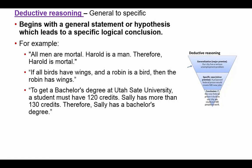Another example of deductive reasoning: to get a bachelor's degree from Utah State University, a student must have 120 credits. Sally specifically has more than 130 credits; therefore Sally has a bachelor's degree. The key with deductive reasoning is starting with a general statement that leads to a very specific conclusion.